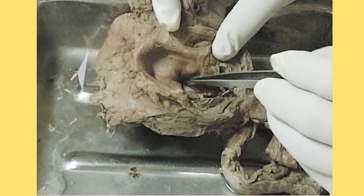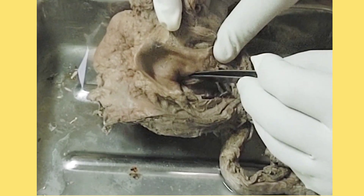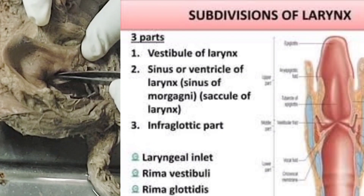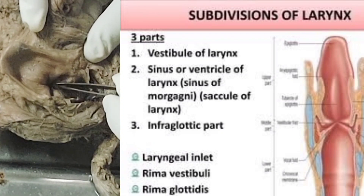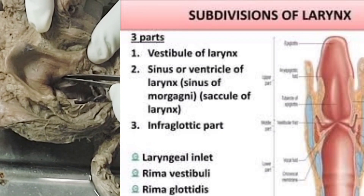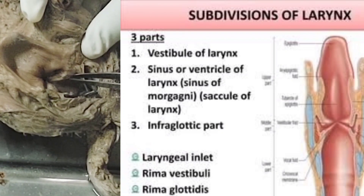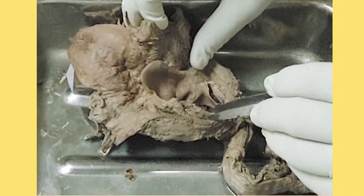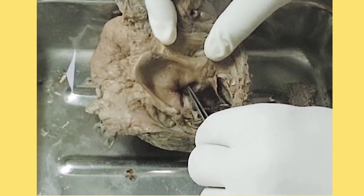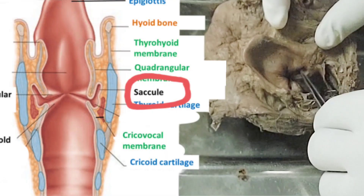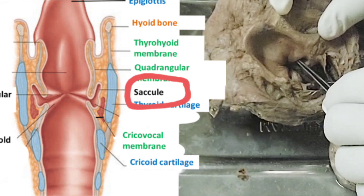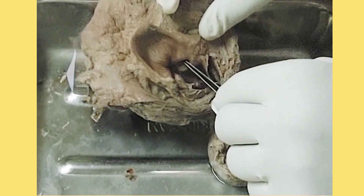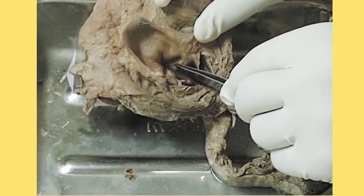The three parts of the interior: the upper part is the vestibule, and the middle part is a depression where there is neither vestibular ligament nor vocal ligament — so there is a gap. This space or depression is called the sinus of the larynx, which is the middle part of the interior. The lower part is called the infraglottic part. In the sinus, mucus secretion is produced due to the presence of mucous glands in the saccule of the larynx, and it lubricates the rima glottidis.